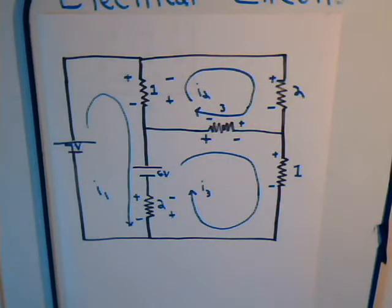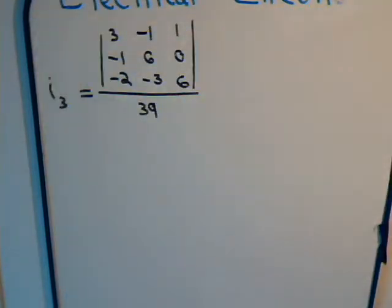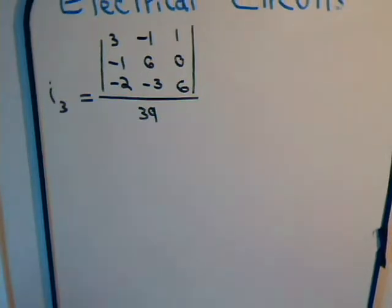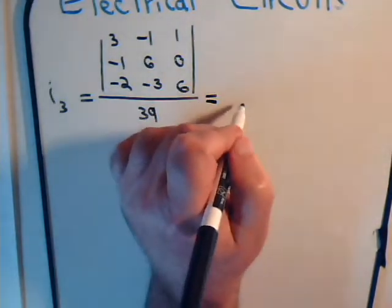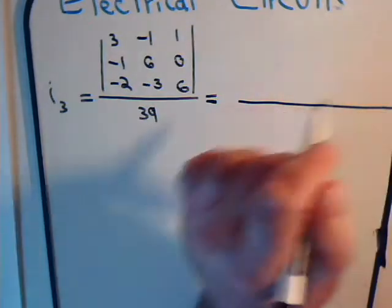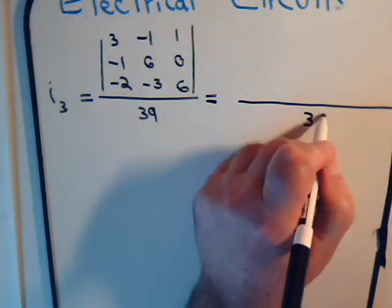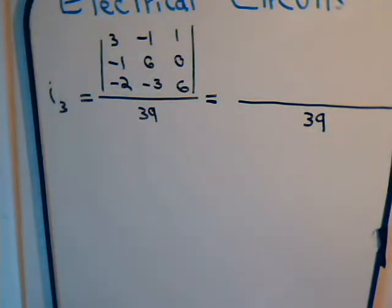This was our original circuit that we began with. Here is the expression for current I3. It's the same story. We have this expanded by minors. Nothing new here really. Divided by 39.